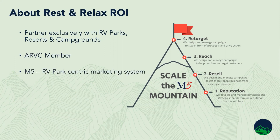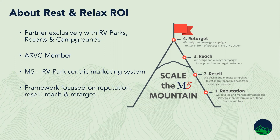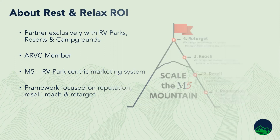We talk about the M5 a good bit — it is an RV park centric marketing system. We focus on these four areas of reputation, resale, reach and retarget. Today's conversation really kind of goes around the reach and resale portion of your marketing.